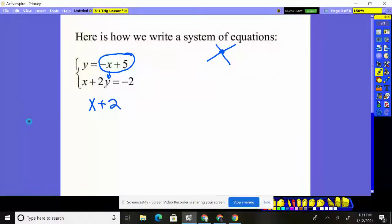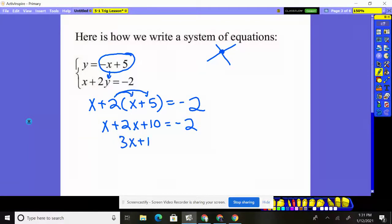So we have x plus 2 times y. What is y? Y is worth x plus 5. That's the expression that represents y's value. And that equals negative 2. So we need to distribute the 2 here. So we have x plus 2x plus 10 is equal to negative 2. That gives me 3x plus 10 is negative 2. Subtract 10 from both sides. 3x equals negative 12. Divide by 3. x is negative 4.